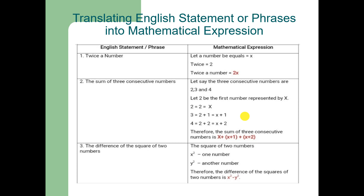Similarly, we may also write the difference of the squares of two numbers mathematically. Let us suppose the square of the first number is x² and the second number is y². Therefore, the difference of the squares of the two numbers is x² minus y².